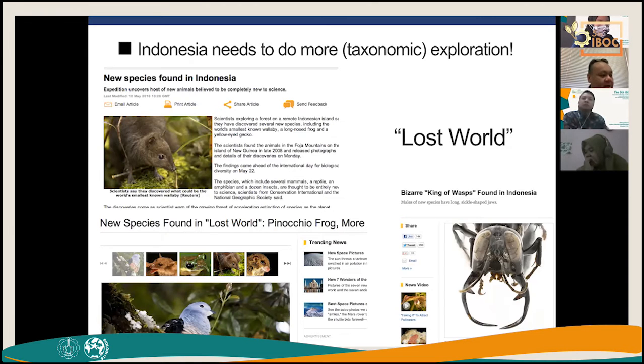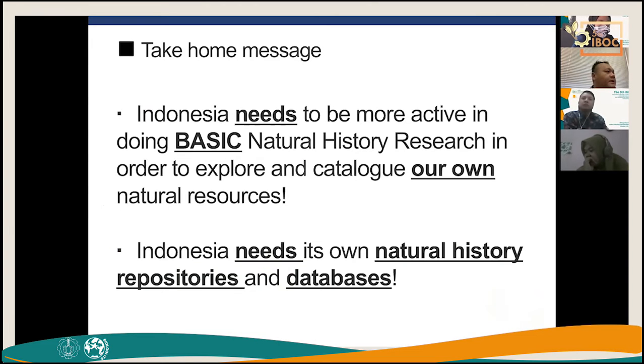Consider two different species of worms — one with three hairs containing toxic substances, one with five hairs containing medicine. Pharmaceutical researchers wanting to develop medicine from the five-haired worm must go back to taxonomic research to correctly identify samples from the field. You still need basic science and taxonomy. The take-home message: Indonesia needs to be more active in basic natural history research and needs its own repositories and databases.